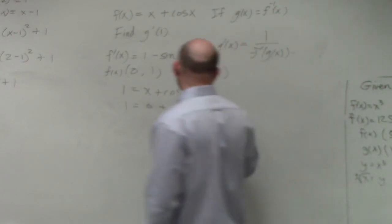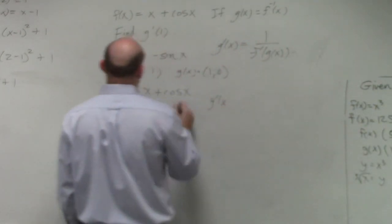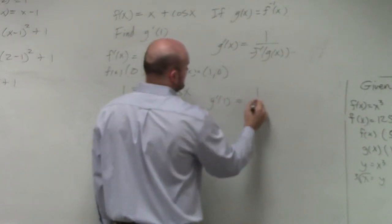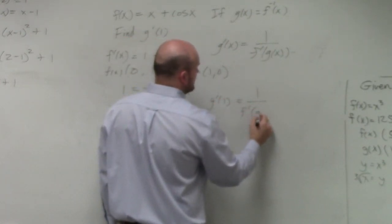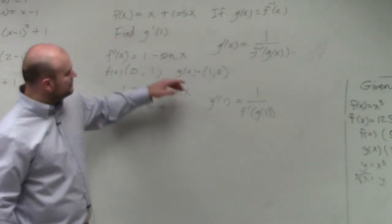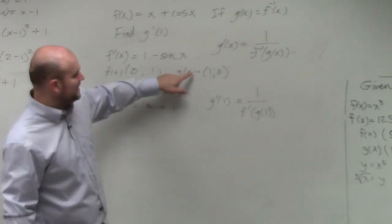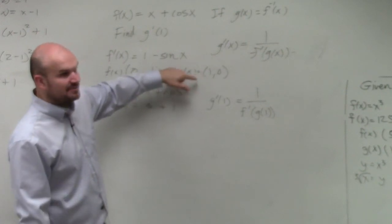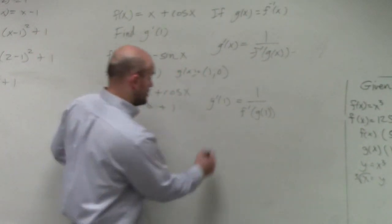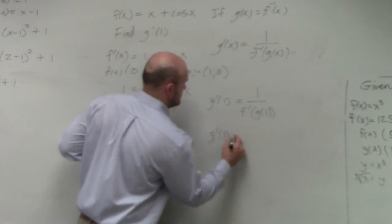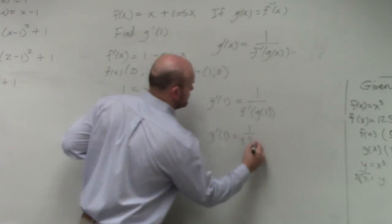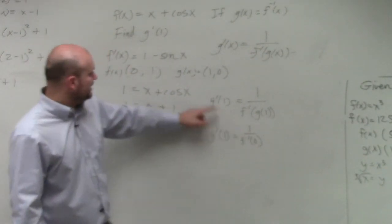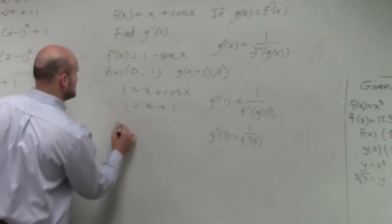So now, by using this information, if I want to find g prime of 1, that's 1 over f prime of g of 1. Well, g of 1 gives me, when I plug in 1 into my g of x function, g of 1, I end up getting 0.